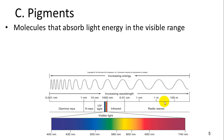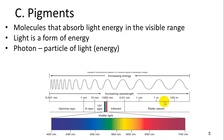Pigments are molecules that absorb light in the visible range. Light is a form of energy, and a photon is a particle of light. We'll refer to photons when we talk about energy from the sun.